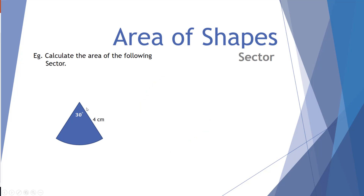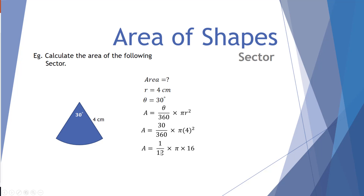Example: a sector of radius 4 with an angle of 30 degrees. Area equals question mark, radius equals 4, angle equals 30 degrees. Substituting: 30 over 360 simplifies to 1/12. One-twelfth times π times 4 squared (which is 16) gives approximately 4.2 centimeters squared.